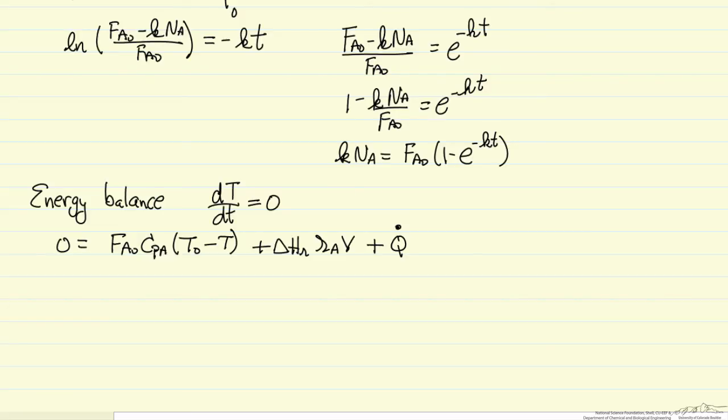Keep in mind, R sub A times V, this term, minus K C A times V is equal to minus K times Na, and that's what we calculated from our mass balance.